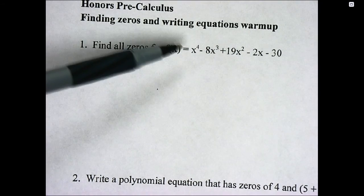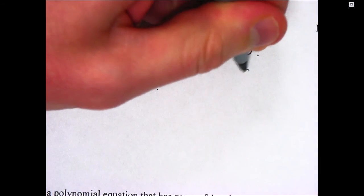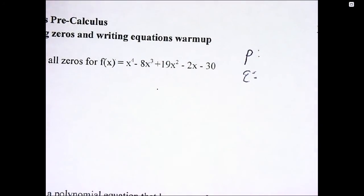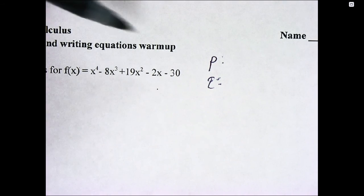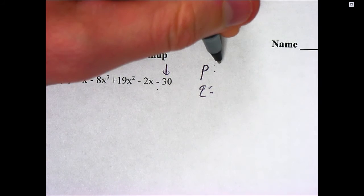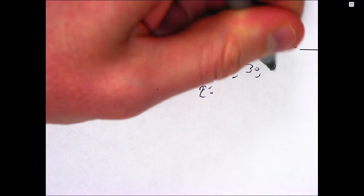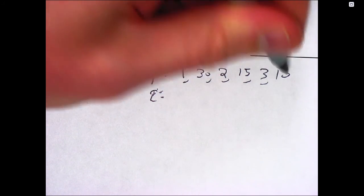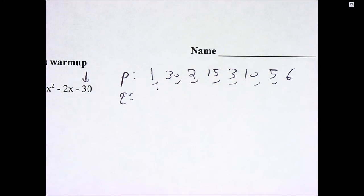And then we're also going to think about the rational roots theorem. Rational roots theorem talks about the possible rational roots, so possible roots that are fractions basically. We're going to create the fractions by looking at the constant, and so that's going to be my P list. The factors of 30 would be 1 and 30, 2 and 15, 3 and 10, and 5 and 6. So a lot of them.